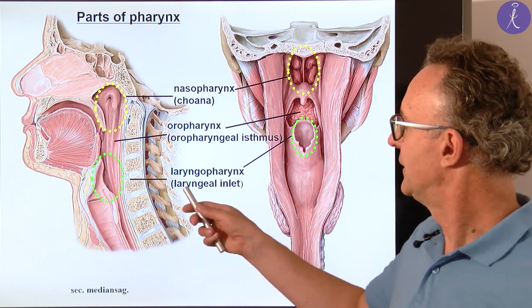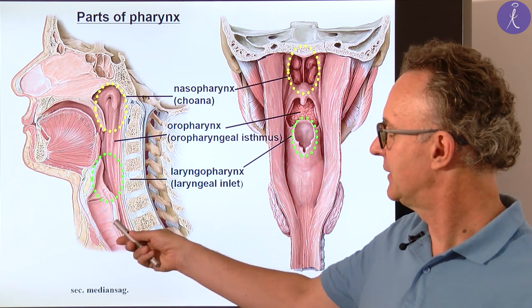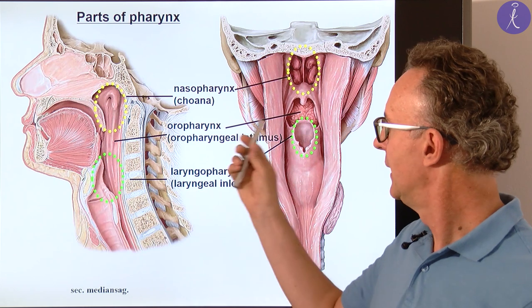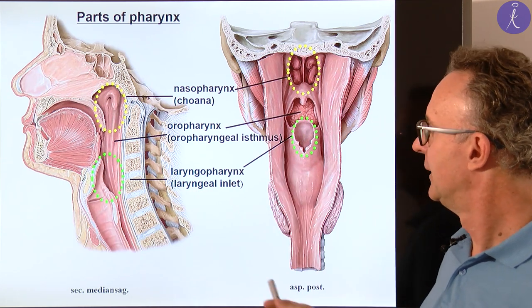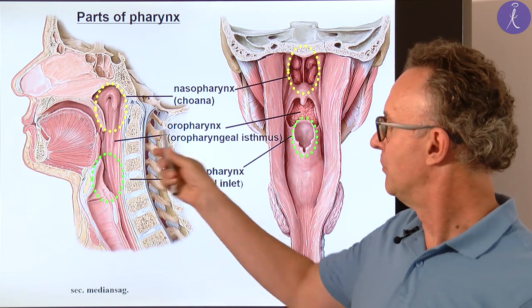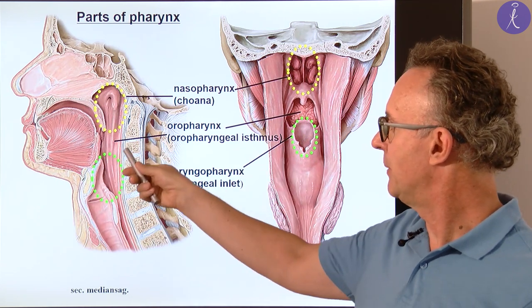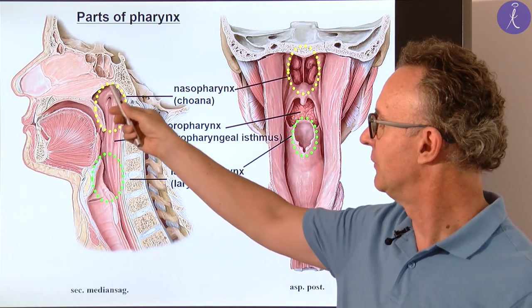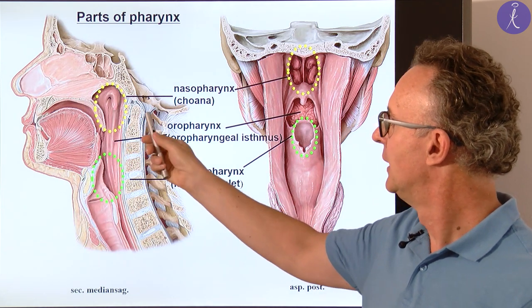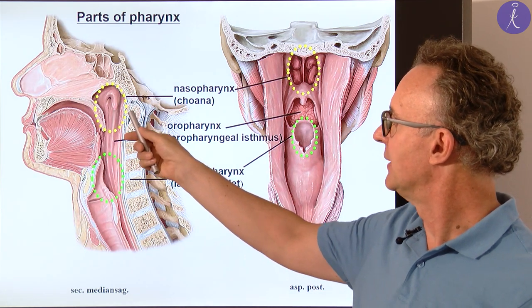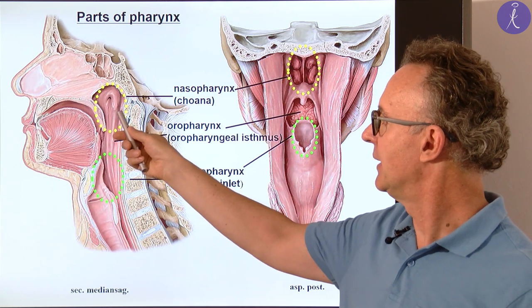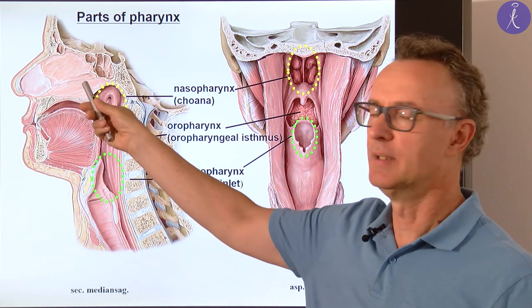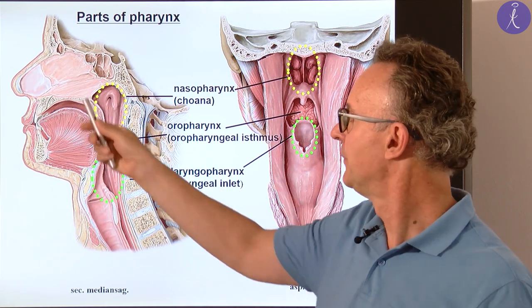Here you see a mid-sagittal section of the head and neck and a posterior aspect. In both you see the three parts of the pharynx. The uppermost, labeled with yellow, is called the nasopharynx. This communicates through the choana with the common nasal cavity.